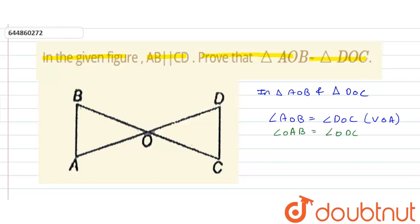Because both angles are alternate angles and angle ABO is equal to angle DCO because these angles are also alternate angles.